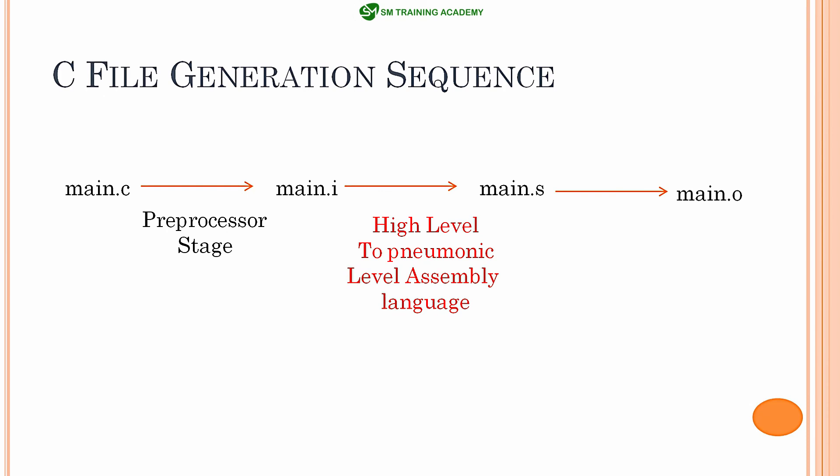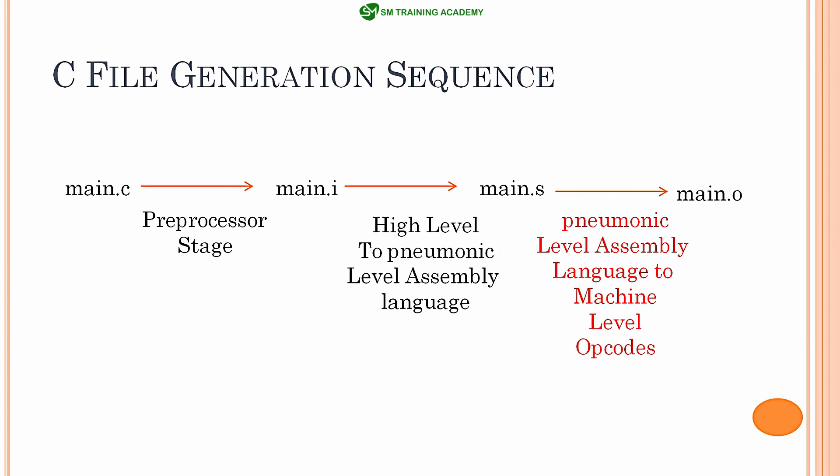The .i file is a C program written in high-level language that is understandable by humans. That high-level language is converted into assembly level instructions and the .s file is generated. Once the .s file is generated, the assembly level instructions are converted into machine-level opcodes and finally the .o object file is generated, required for execution on the host machine or a microcontroller. These machine-level opcodes are nothing but zeros and ones, understandable only by the machine — whether it is a computer or a microcontroller. This is the C program file generation sequence. I hope you understood it better. See you in the next video. Thanks for watching.